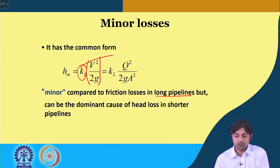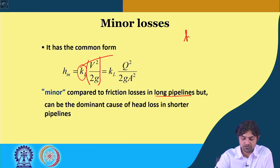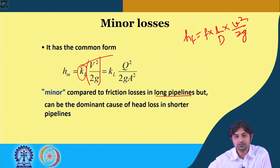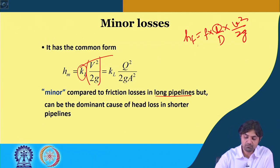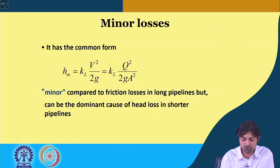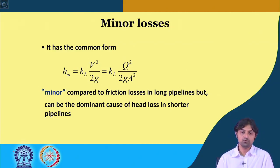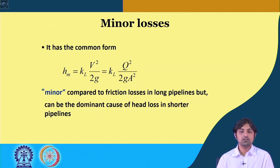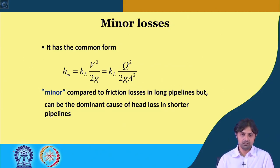Minor losses are called 'minor' because in long pipes the major friction loss — given by F·(L/D)·V²/2g — dominates, making losses from bends, contractions, and expansions relatively small. However, they are not always minor: in shorter pipes, these so-called minor losses can actually be the dominant cause of head loss.